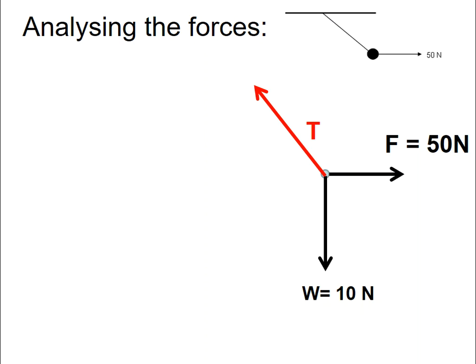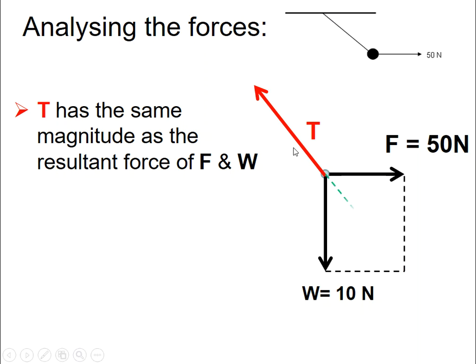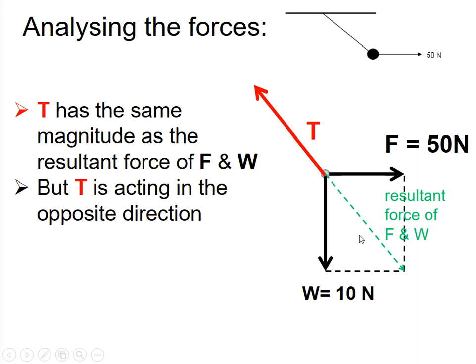Now, if you look carefully, analyzing the forces, you will realize that actually, in fact, the tension is actually counterbalanced by the resultant force of F and W. And T and the resultant force are in opposite direction. And we still obey Newton's first law. The object is at rest, resultant force zero.